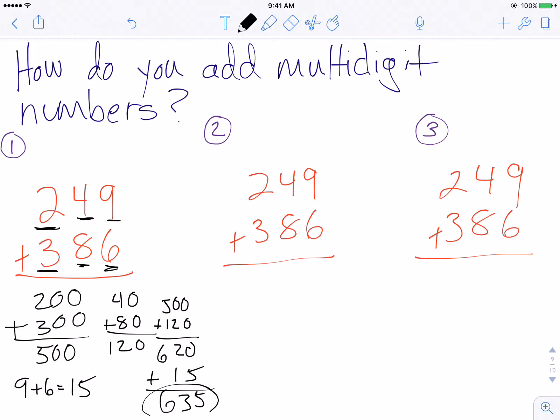9 plus 6 is 15. So I put my 5 down. I regroup my tens, but I'm going to regroup them on the line down here with a 1. 8 and 1 is 9 plus another 4 is 13. Again, I regroup my 1. I have my sum of 635 again.